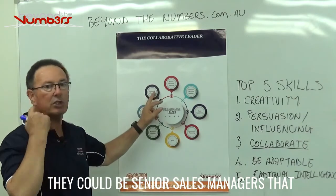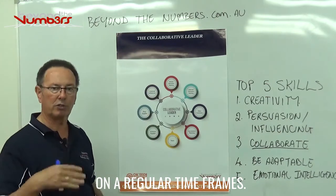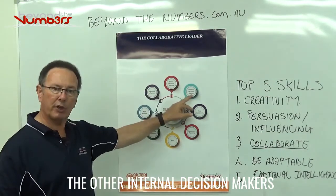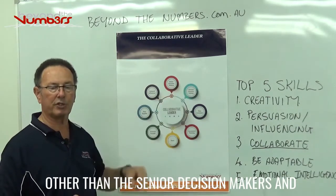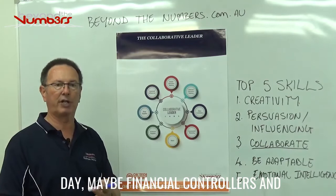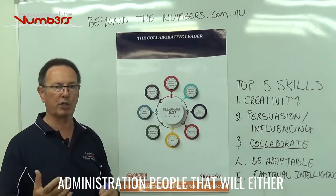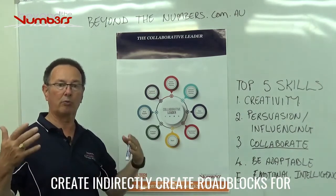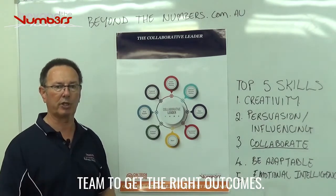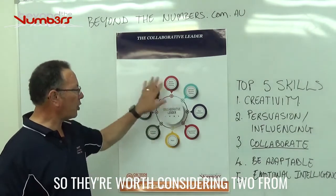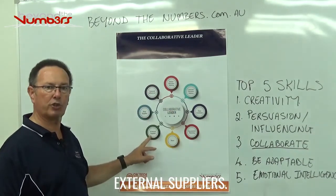They could be senior sales managers interacting with your customer base on a regular basis. There are also other internal decision makers beyond the senior ones — people like financial controllers, contracts, and administration staff who could either indirectly create roadblocks for you and your team, or become enablers to get the right outcomes. They're worth considering from a collaborative leader's point of view. And then we have things like our external suppliers.